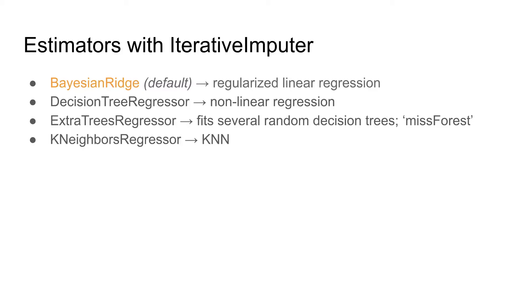The second and third options are Decision Tree Regressor and Extra Trees Regressor — these are non-linear regressors. Extra Trees Regressor is similar to the MissForest regressor used in R. Finally there is K Neighbors Regressor, based on the K-Nearest Neighbor algorithm. Again, it's perfectly okay if you don't know how each of these works — I'll be creating separate videos for each method. Here we'll focus on how to implement them and see what imputed values we get.